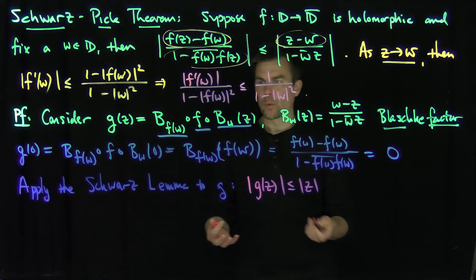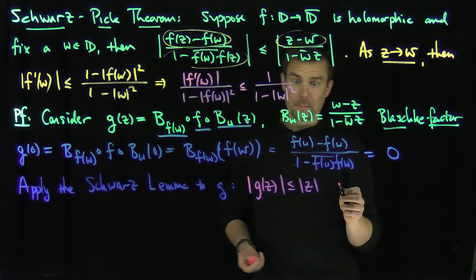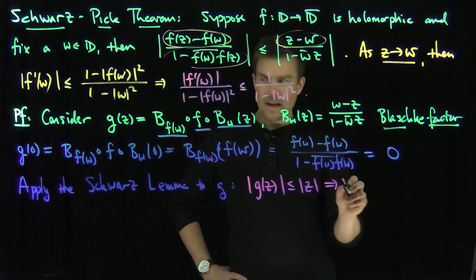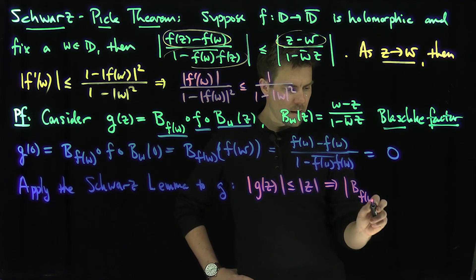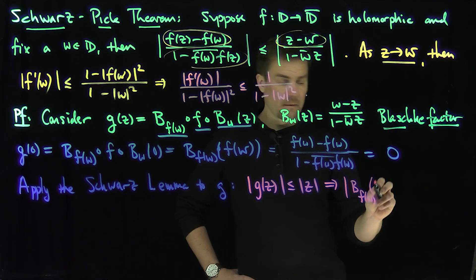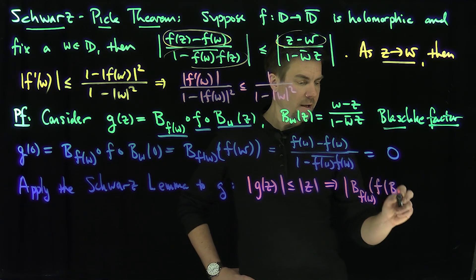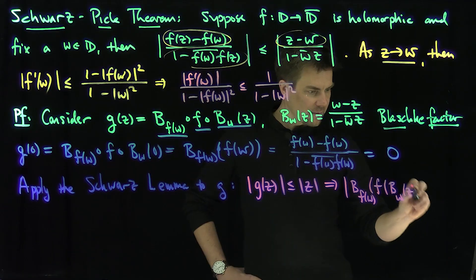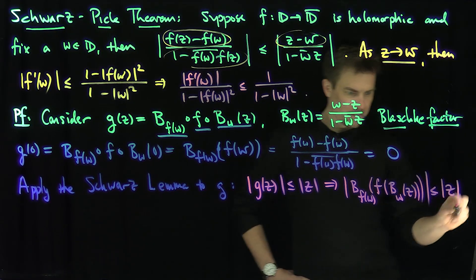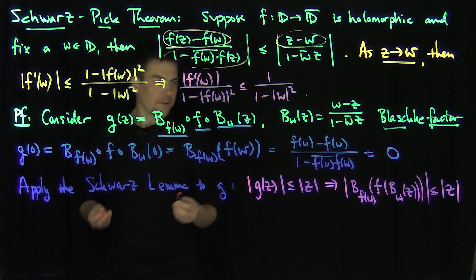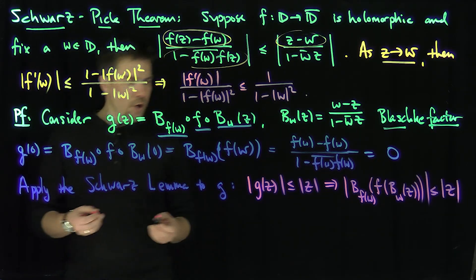How does that help us? Now I have to unwind the definitions. What this says is that B_{f(ω)} of f of B_{ω}(z) is less than or equal to the modulus of z. Now, the cool thing I'm going to do is I note—